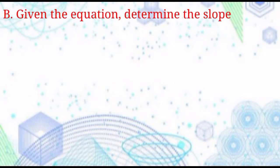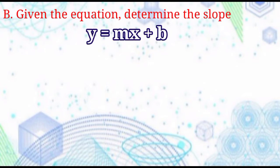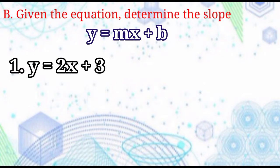If the given problem is the equation of the line, to find the slope, the equation must be written in slope-intercept form: Y equals MX plus B. Because M in the form represents the slope. Otherwise, rewrite the equation to its slope-intercept form. Example number 1: Y equals 2X plus 3. Observe that this equation is already in slope-intercept form. The slope is the numerical coefficient of X.